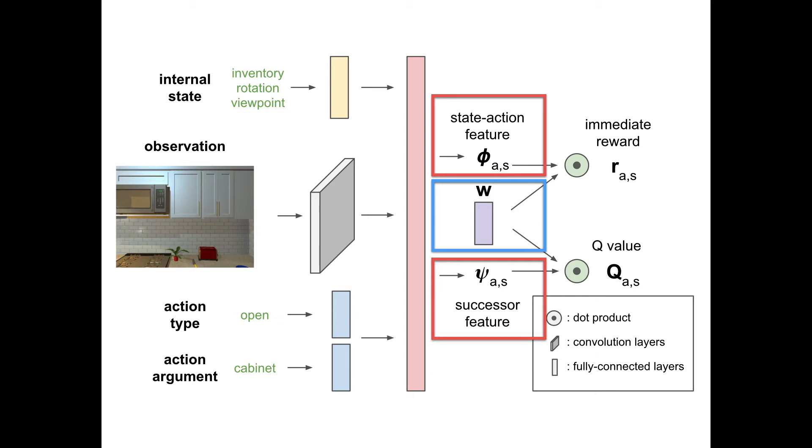When adapting a trained network to a new task, we simply retrain the reward predictor while fixing the successor features that summarize the dynamics.